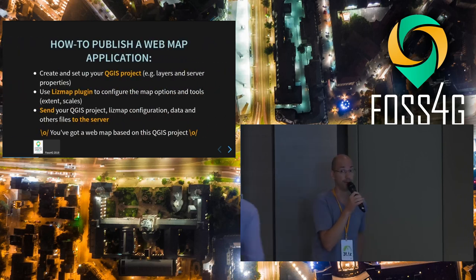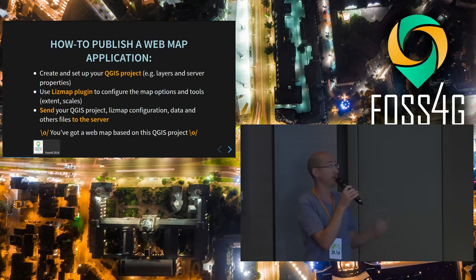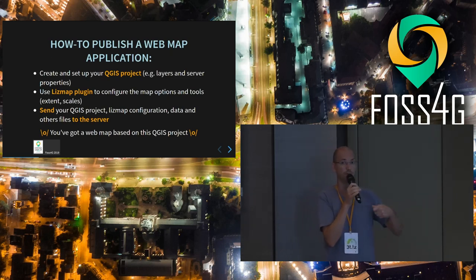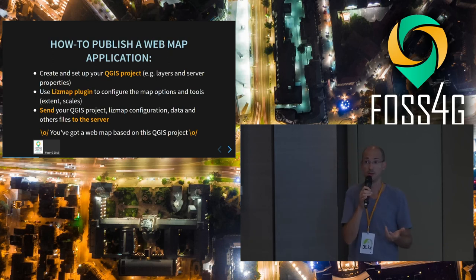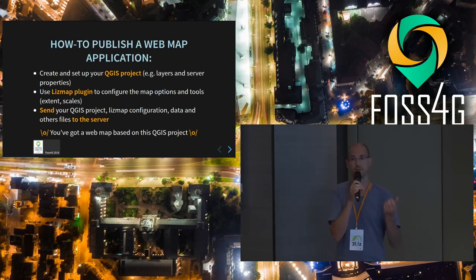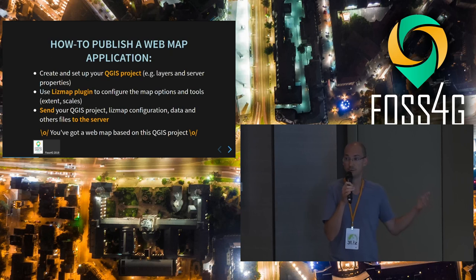How to publish a web map? Basically you just work within QGIS. You configure your project, add your layers and server properties. Then there is a plugin to configure some properties you need, like the tools you want to publish — printing and other tools. Then you send your QGIS file and all other files — it can be shapefiles, geo packages, or what you want — plus some media documents like images or a PDF. You send it to the server and you've got a web map for each of your projects.